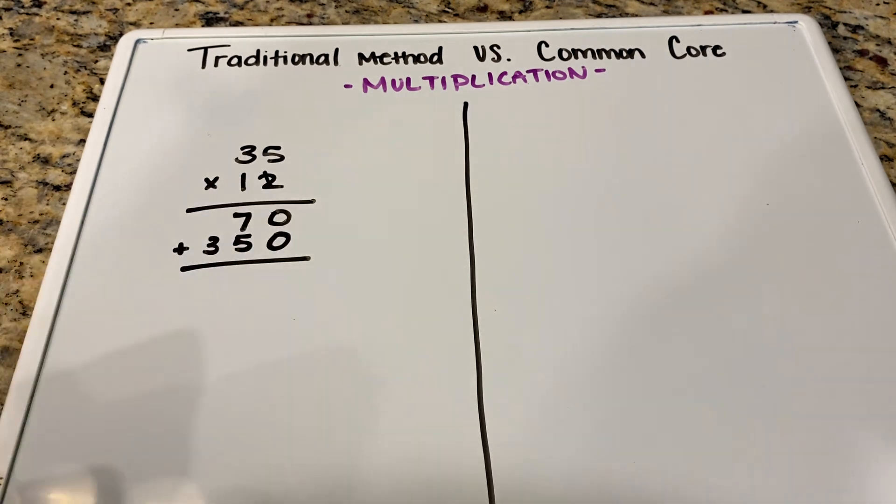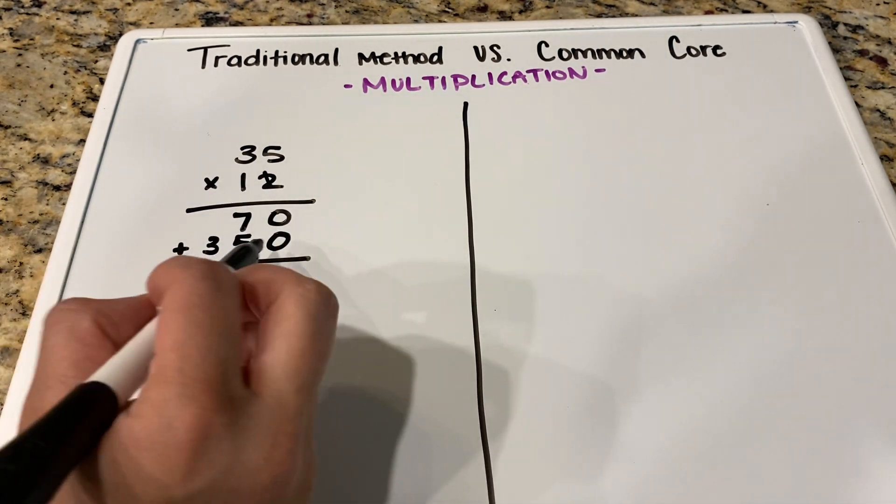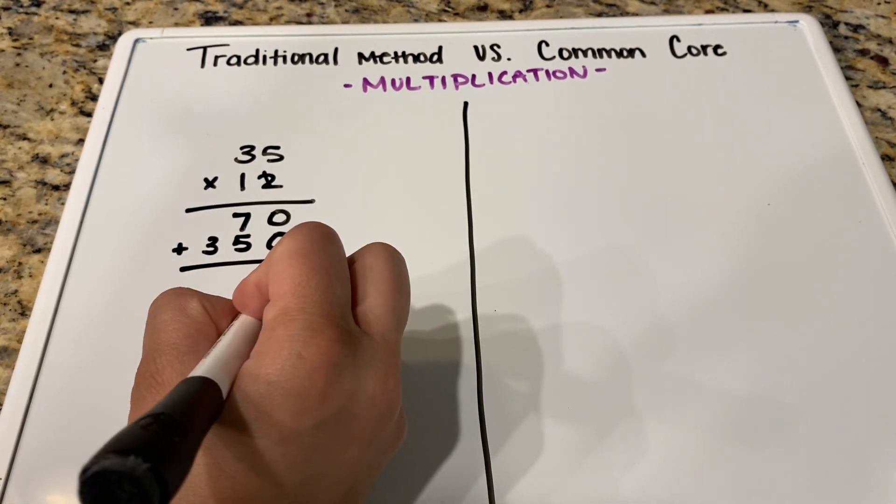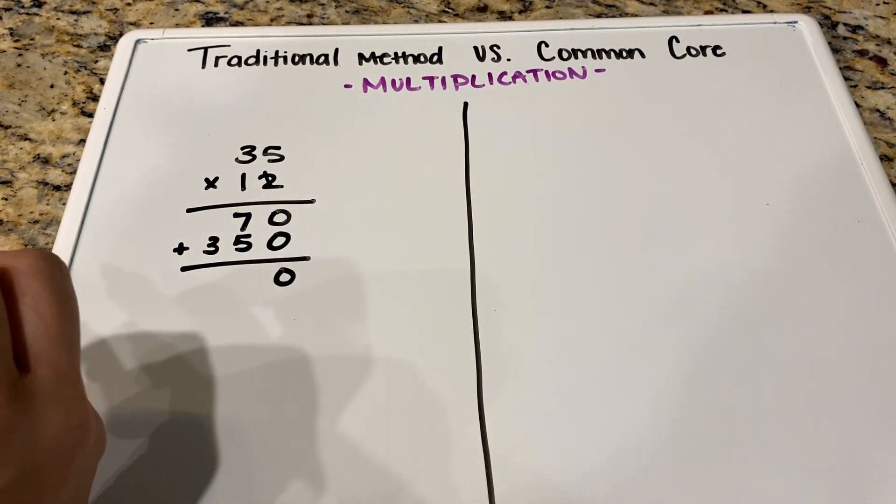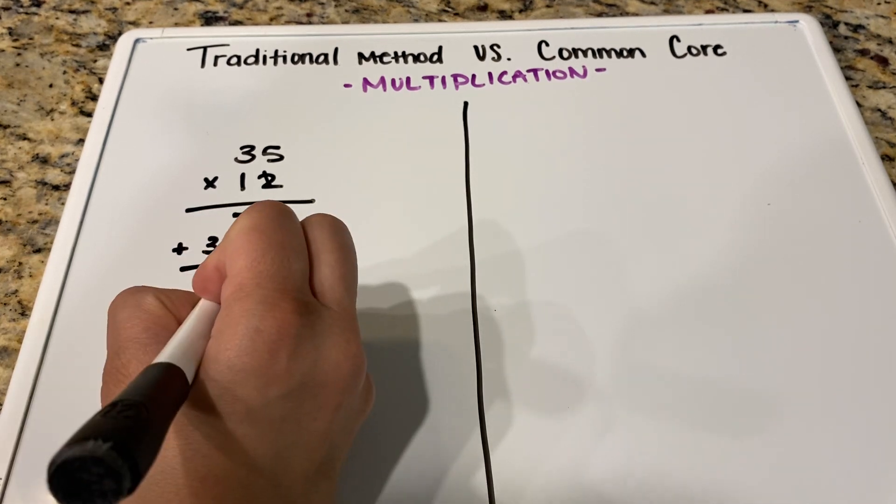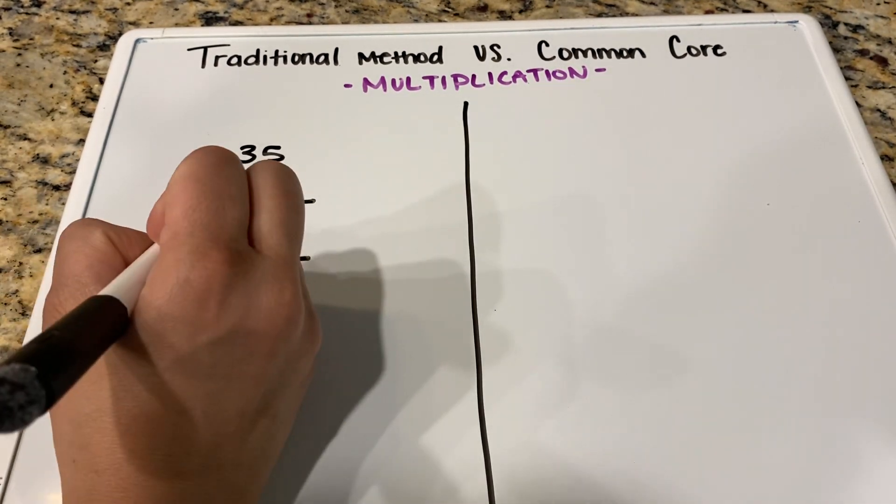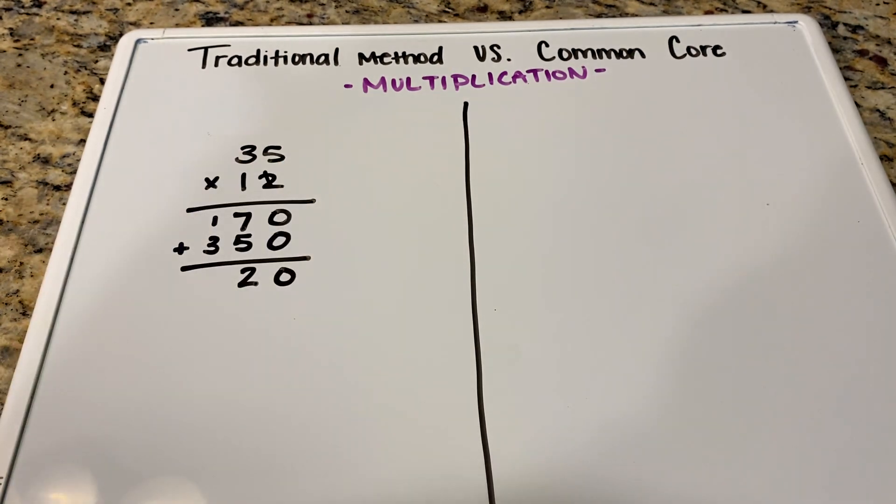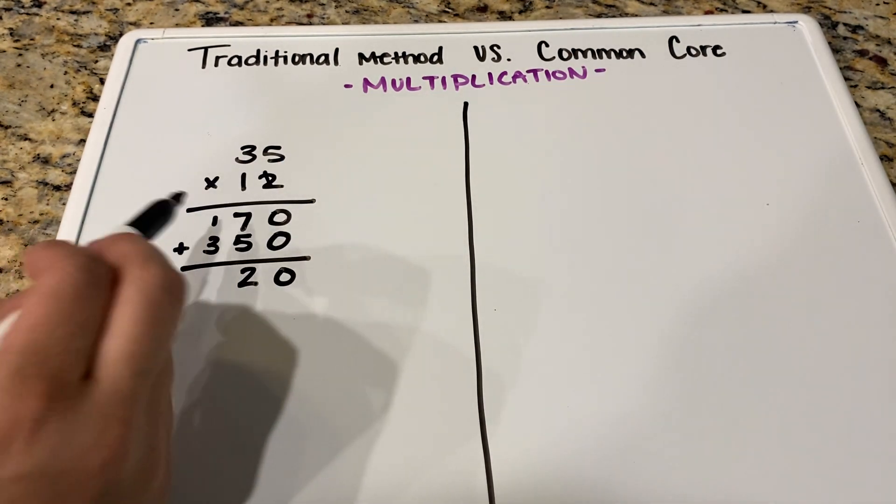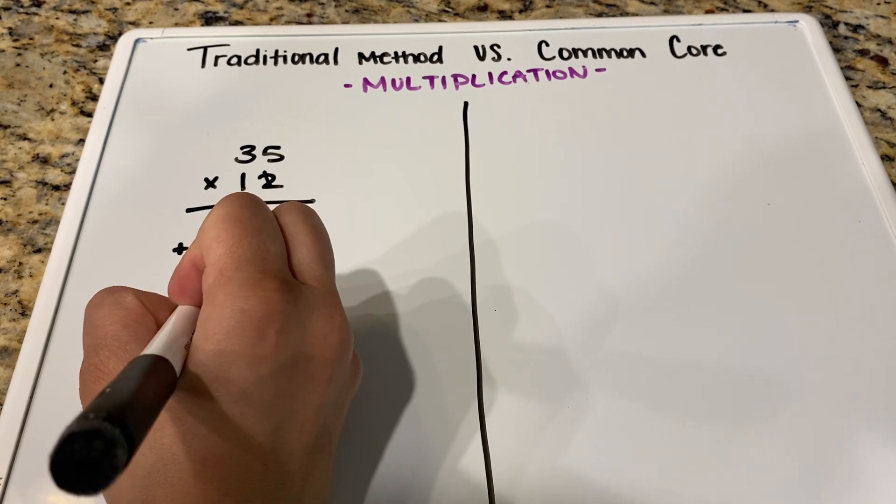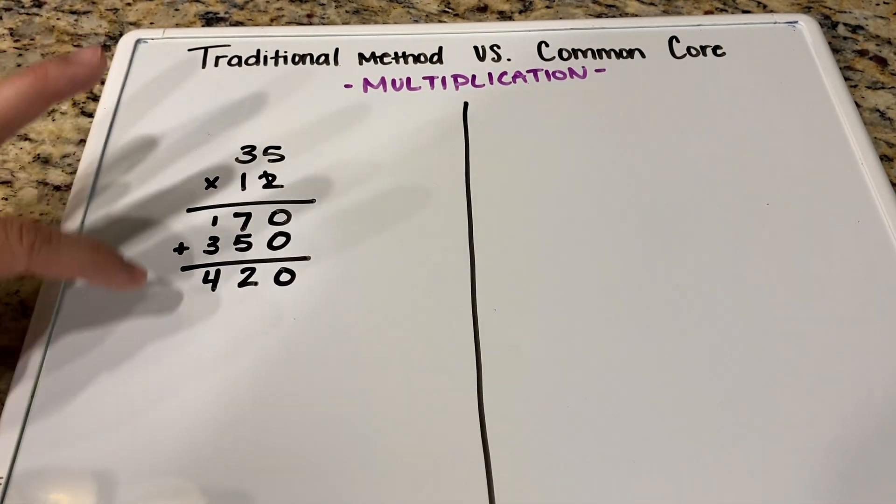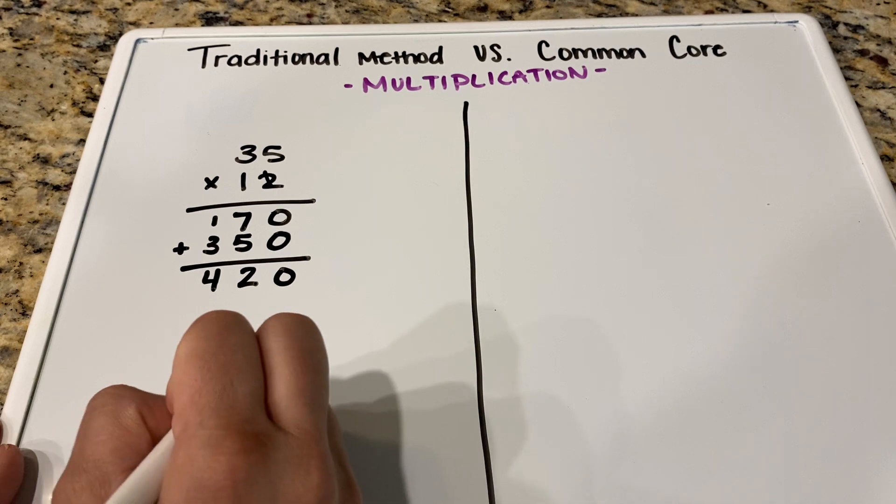Our next step would be to add straight down, or our final step, I should say. So 0 plus 0 is 0. 7 plus 5 is 12. So again, a number above 9. So we need to put the 2 down below in our ones. And then our 1 for our 12, carry it over to the next place. 1 plus 3 is 4.